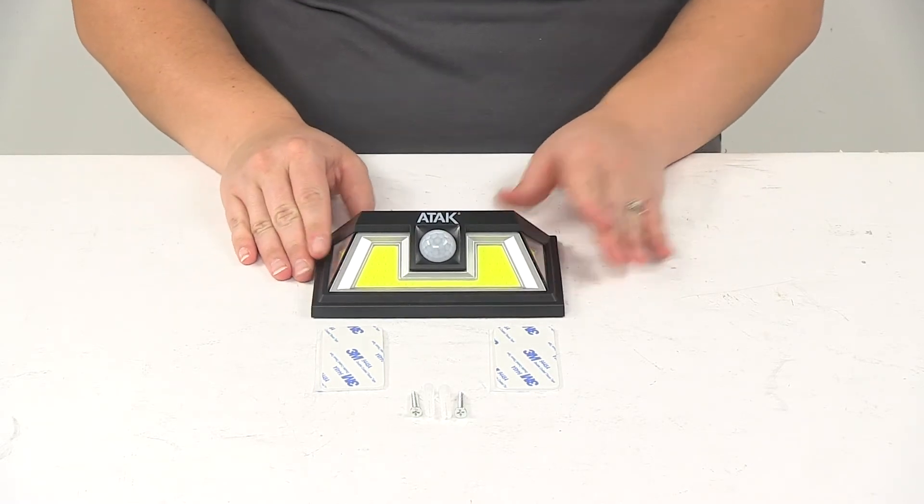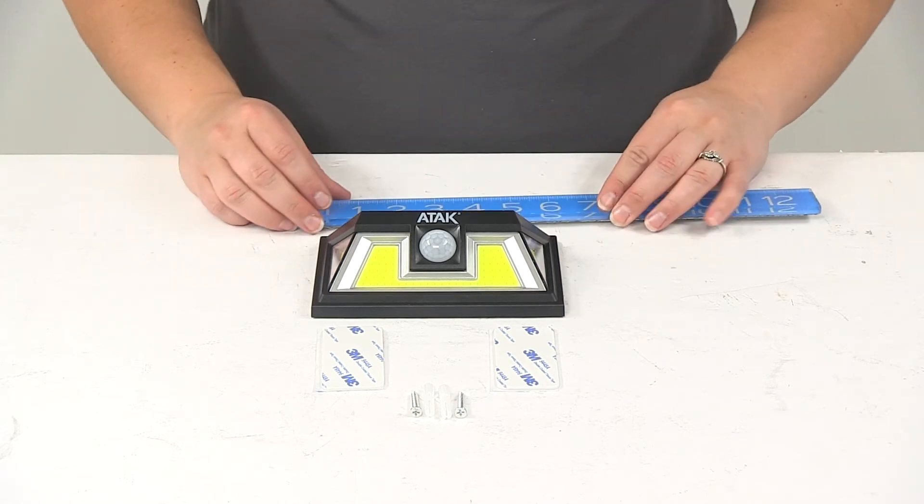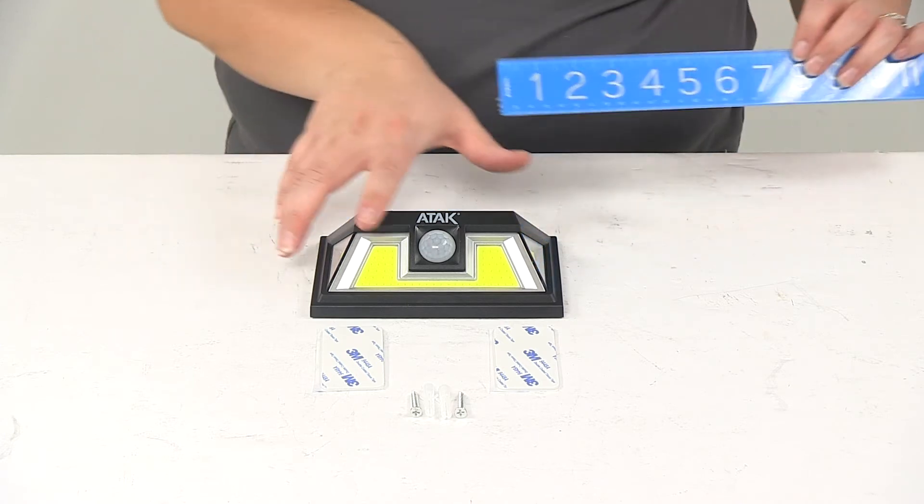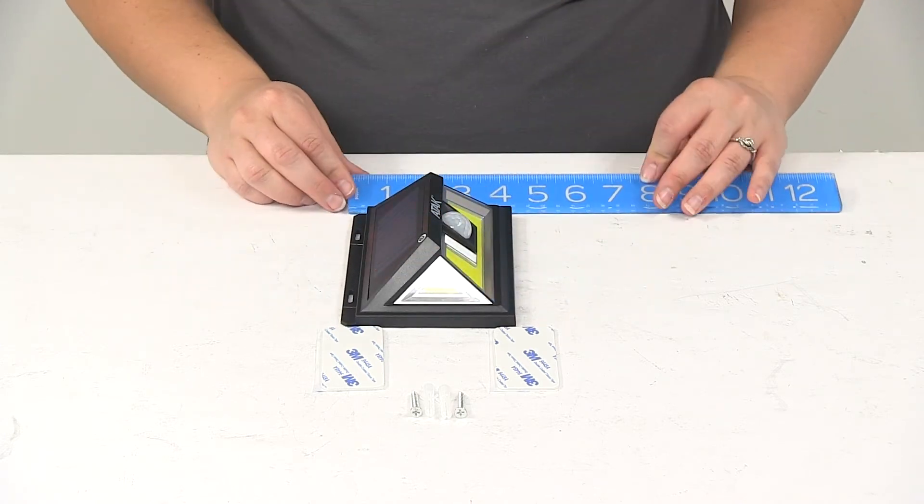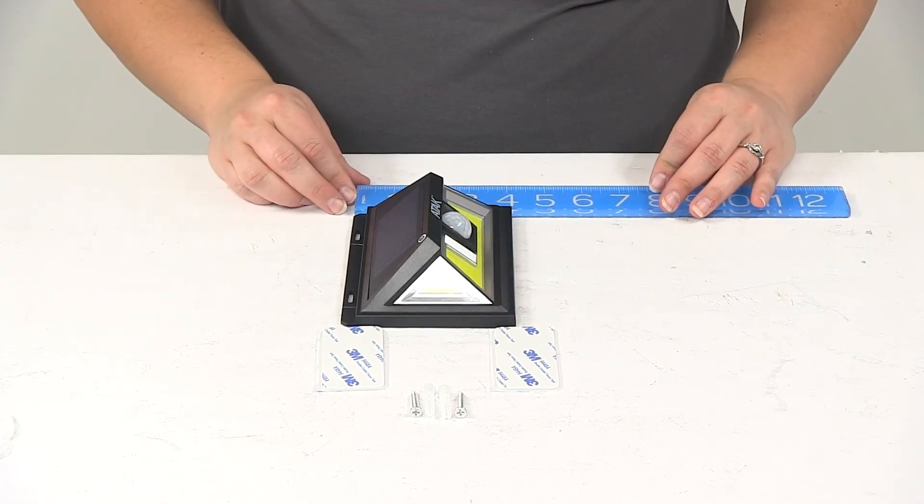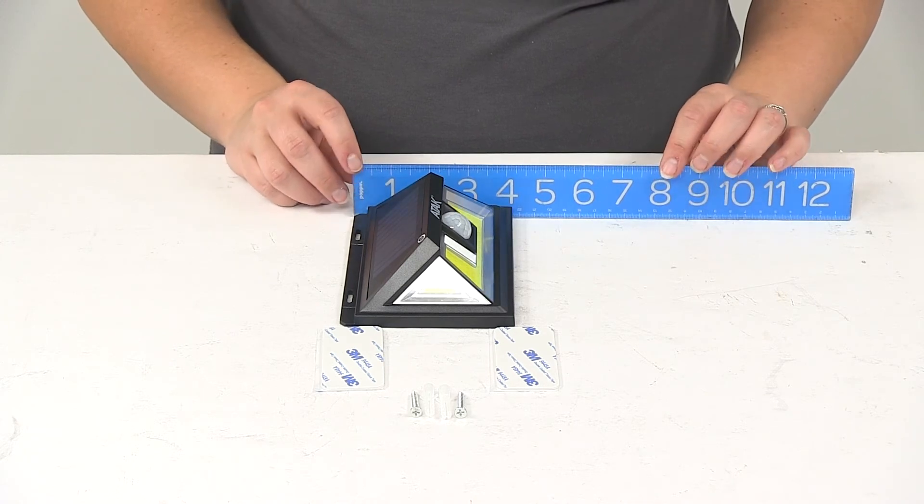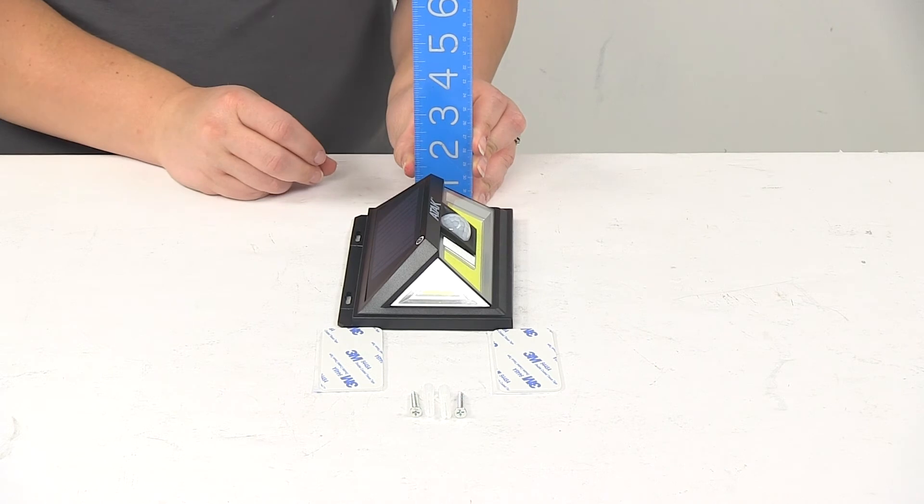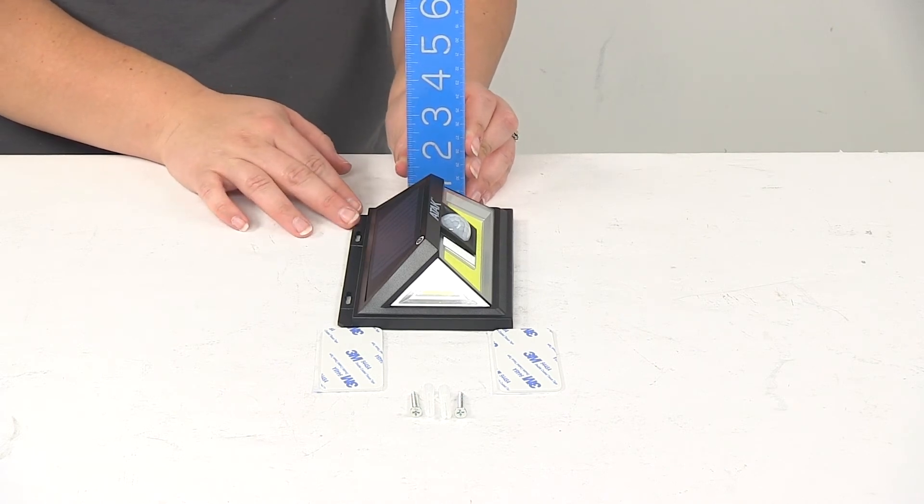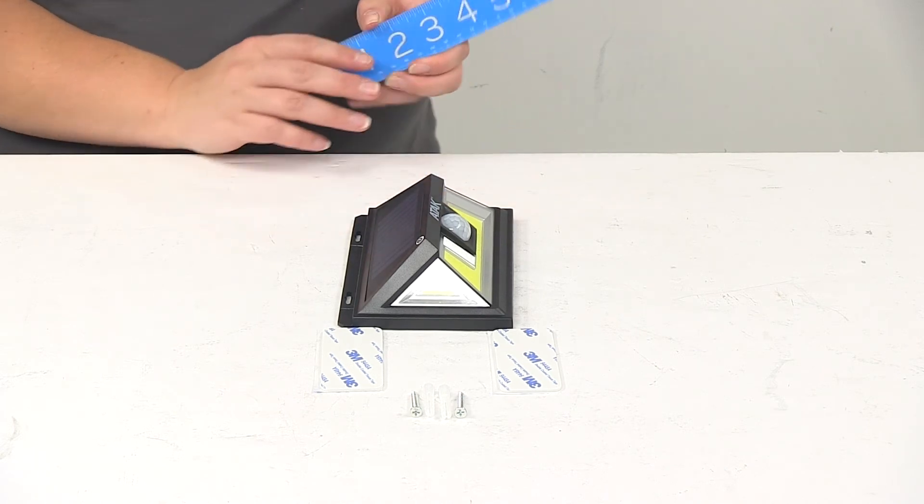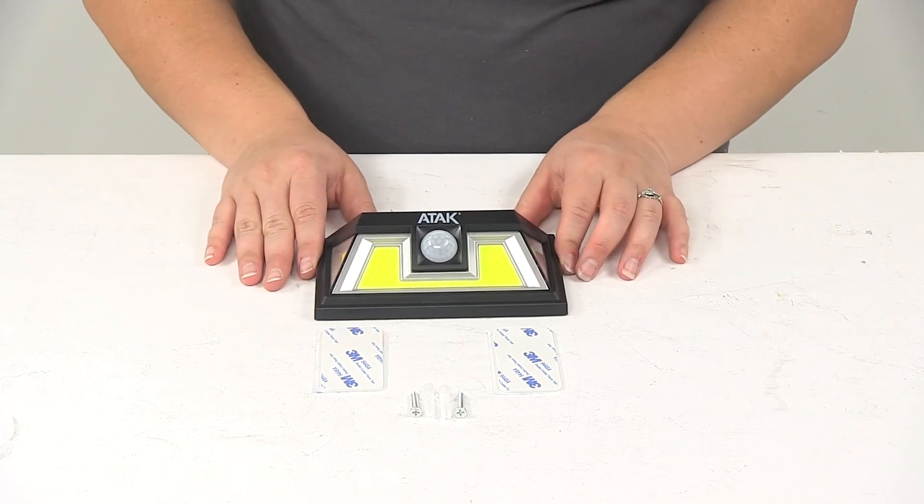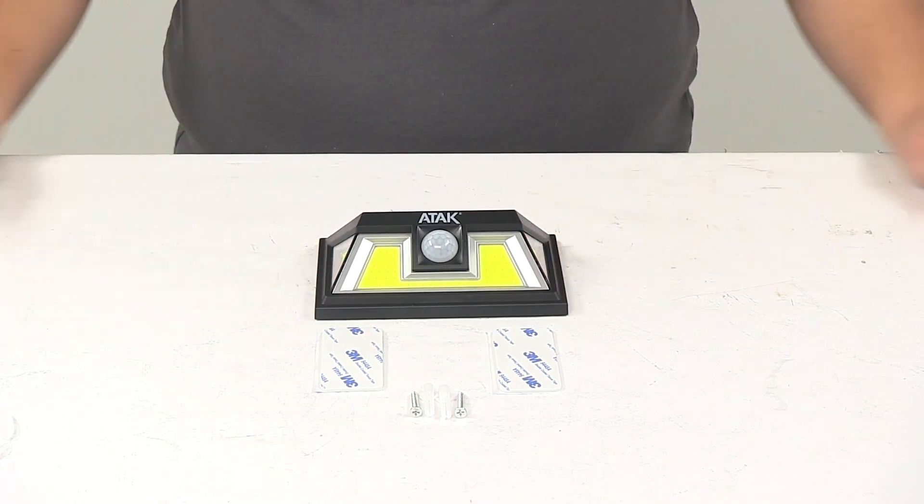As far as the dimensions, the housing is going to be about 6 inches wide by 4 inches, and then the height is going to be about 2 inches. That's going to do it for our look at the Performance Tools ATAC Solar Motion Light.